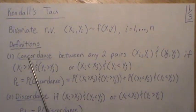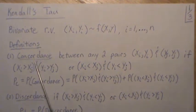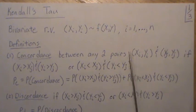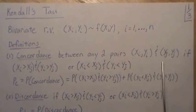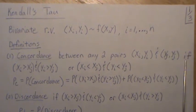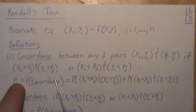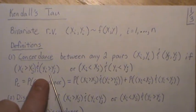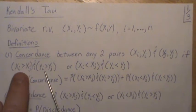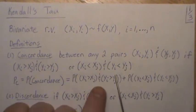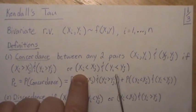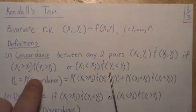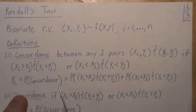Before we start, let's look at some definitions. The first one is concordance, and that's between any two pairs. Our data comes in pairs: (Xi, Yi) and (Xj, Yj). They're concordant if they agree — so the i-component is bigger than the j-component in the X's and the same holds in the Y's — or it could be the other way: the i-component is less than j in X and also less than j in Y. They agree; they're concordant.